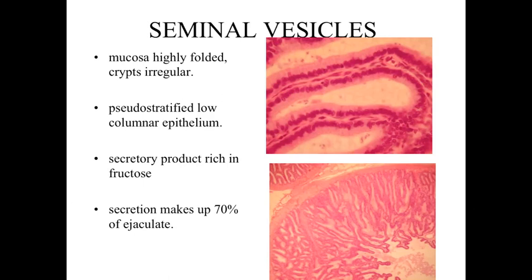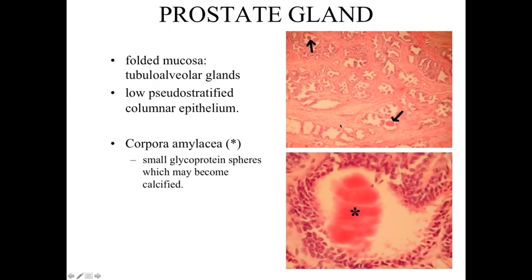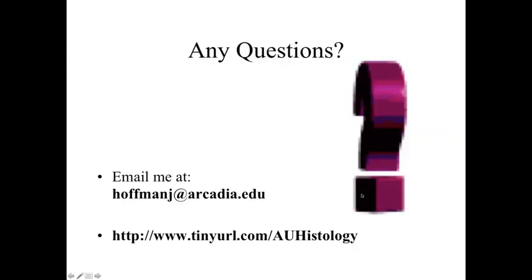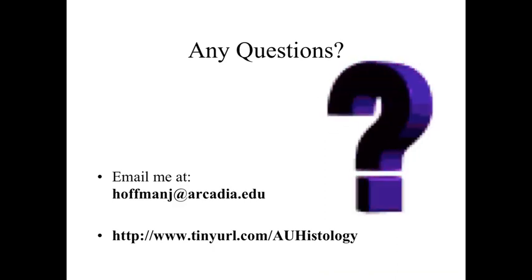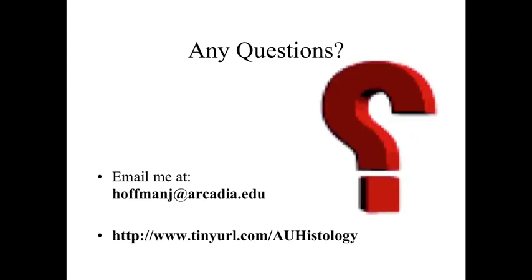The structures we're going to look at: the seminal vesicles have a folded mucosa with a low columnar epithelium. The prostate gland is going to have a low pseudostratified columnar epithelium with corpora amylacea — those starchy bodies, calcium glycoprotein spheres within it that may become calcified. This finishes up our view of the male reproductive system. If you have any questions, feel free to email me.